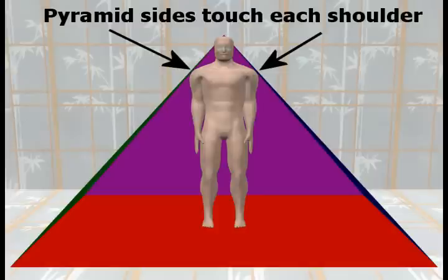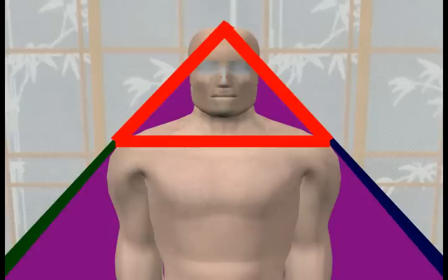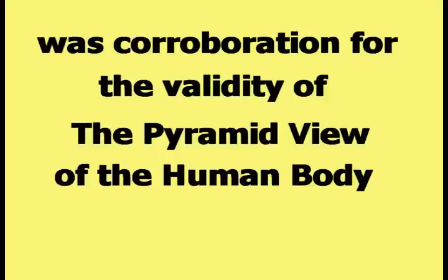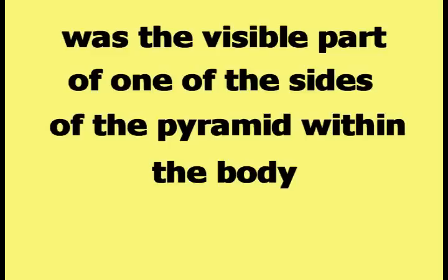This picture was used to demonstrate the pyramid in the human body. The sides of the pyramid run from the ground up to the shoulders, then continue upwards until they meet at a point on the head. It was then pointed out that there is a natural triangle formed by the shoulders and the head. The first video claimed that this natural triangle was corroboration for the validity of the pyramid view of the human body, and that this natural triangle was the visible part of one of the sides of the pyramid within the body.